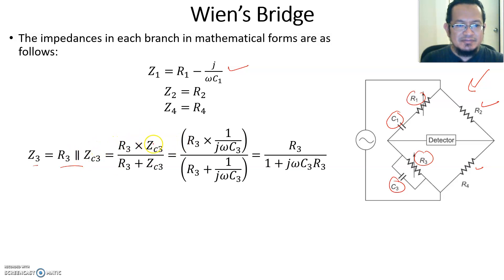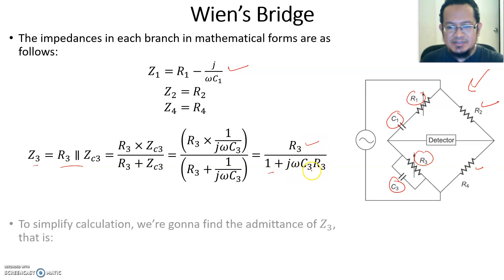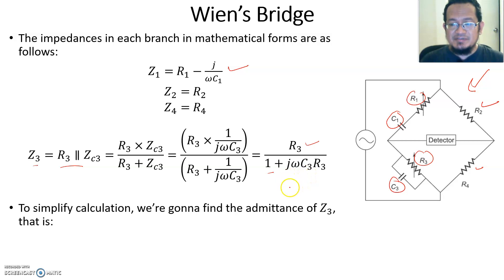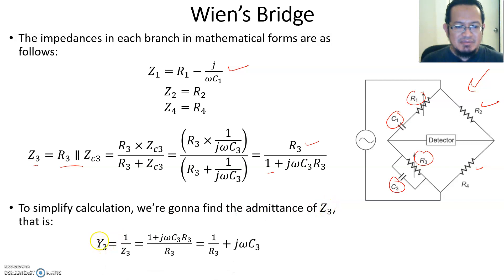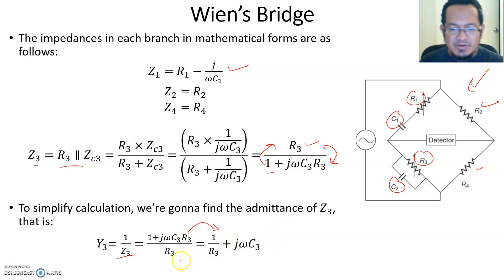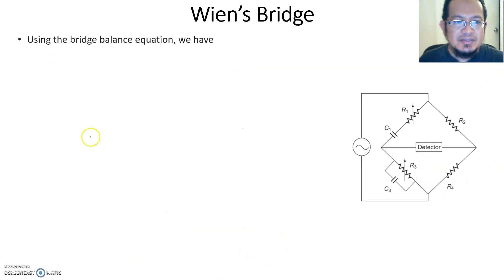If you put R3 and C3 together in parallel, you can solve for the equivalent impedance for that branch, which is R3 divided by (1 + jωC3·R3). For simplification, we are going to define the admittance for Z3. Admittance is just the reciprocal of impedance — one over Z3. If you reverse R3 and simplify, you will have the admittance for branch number three equal to (1/R3) + jωC3.